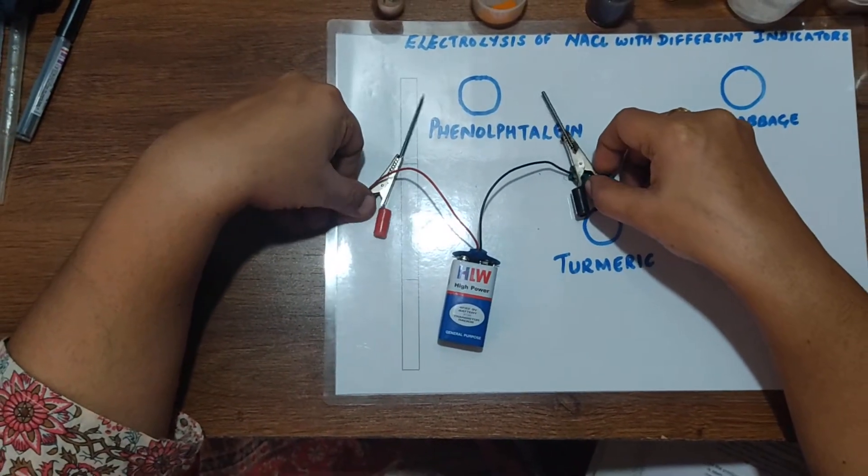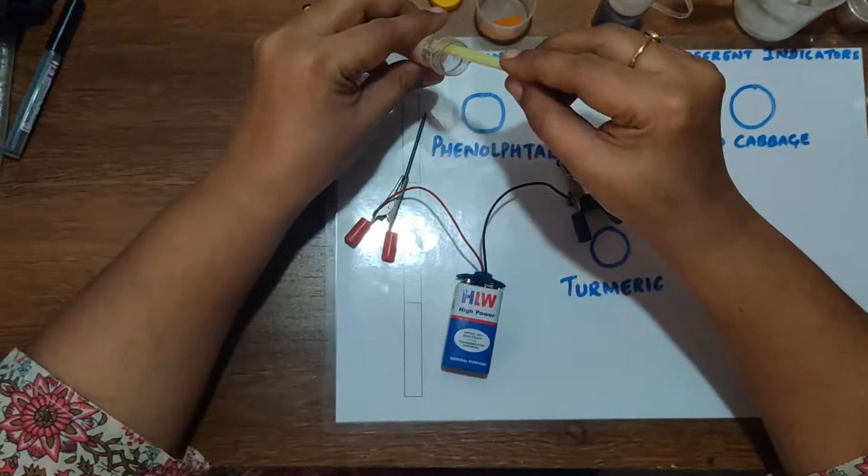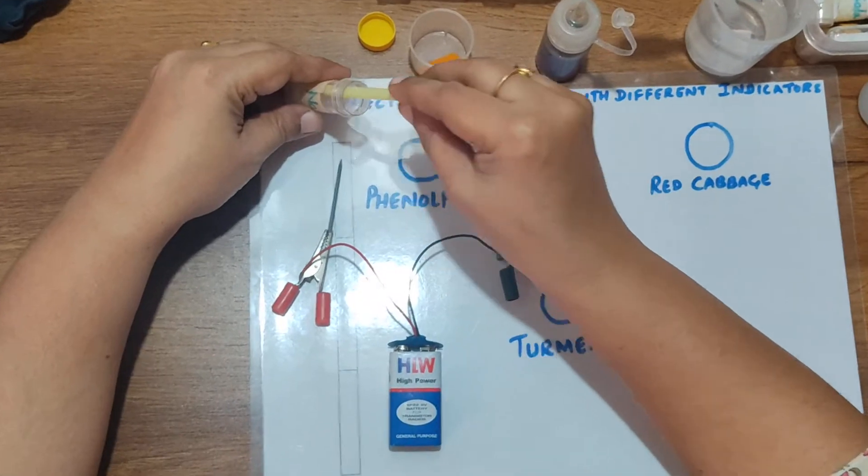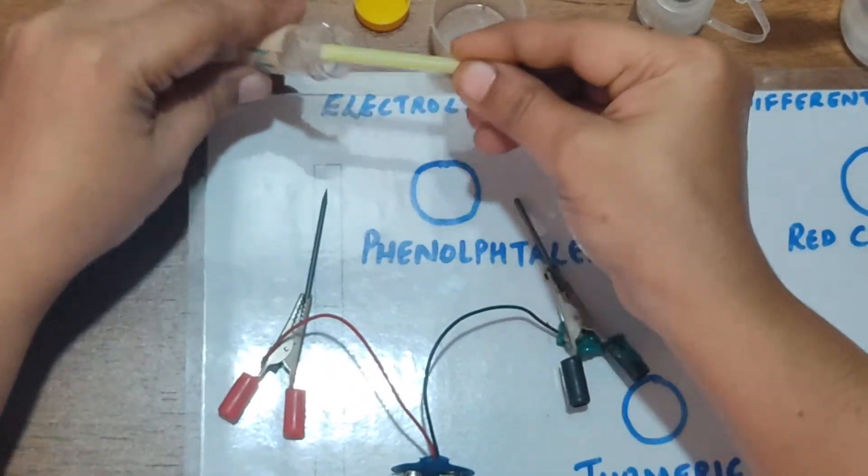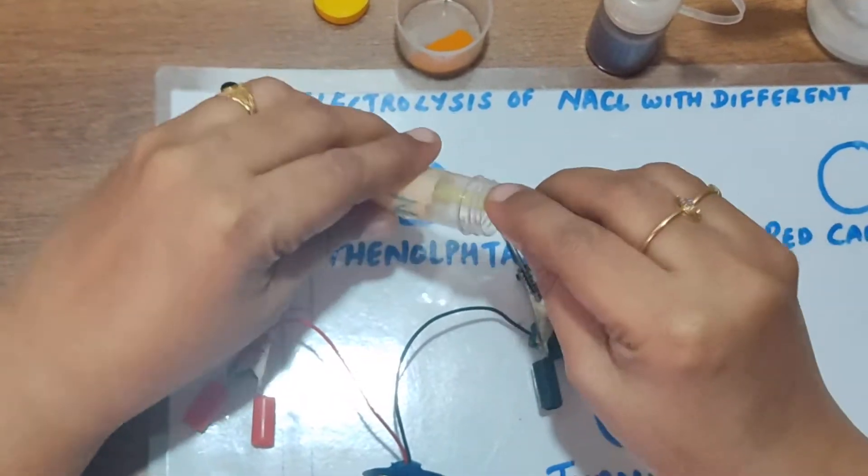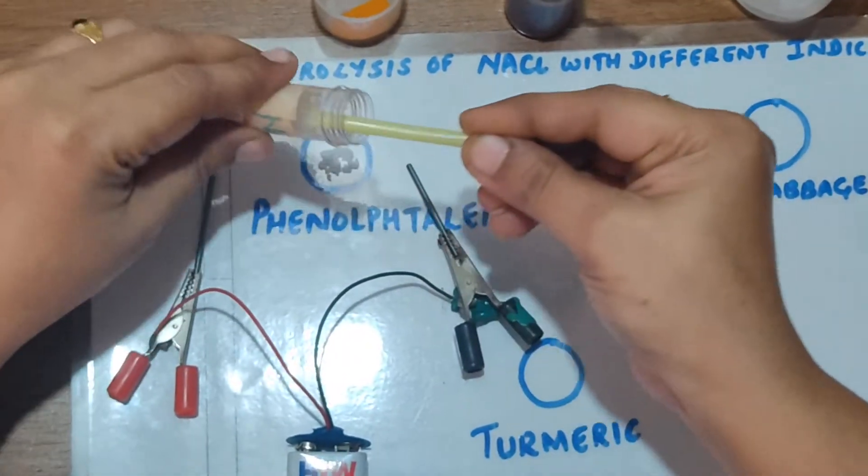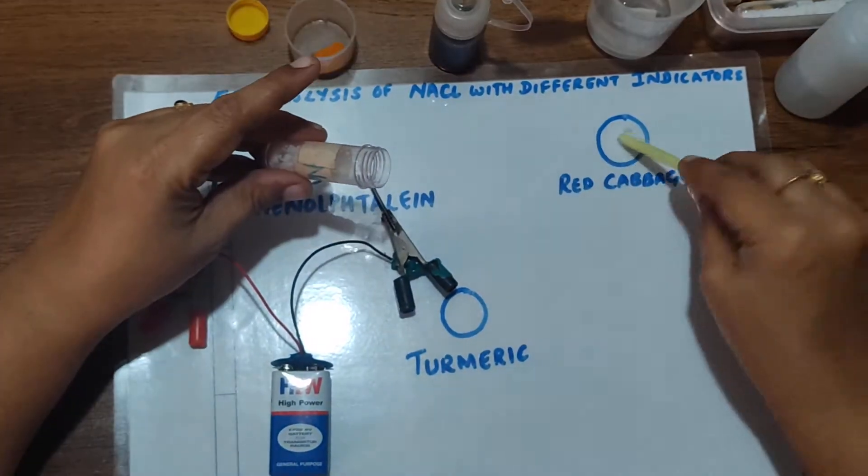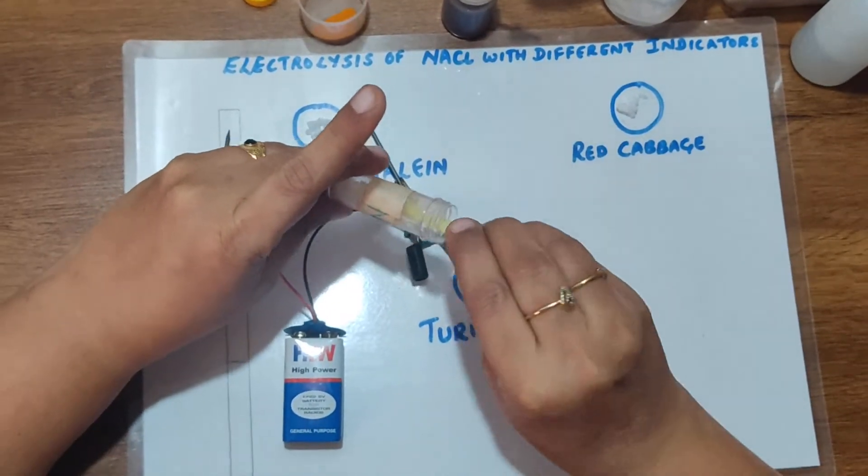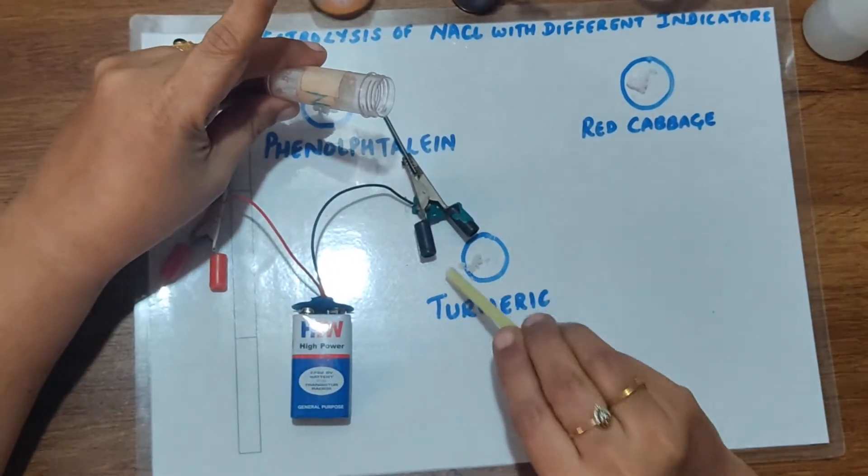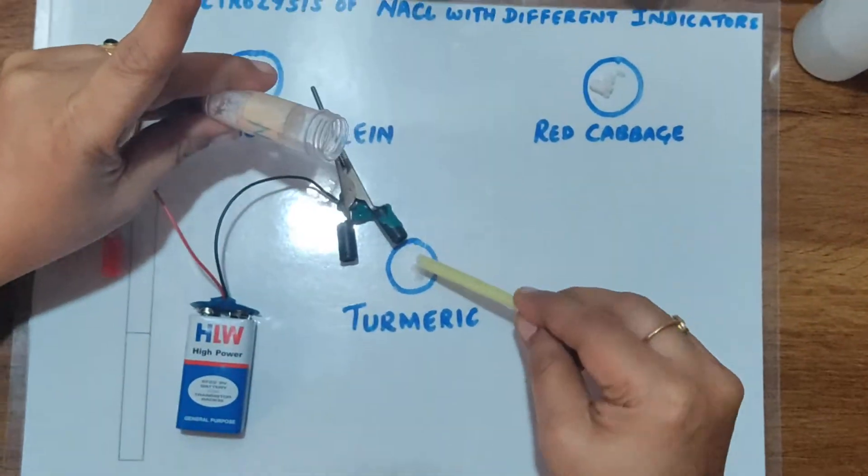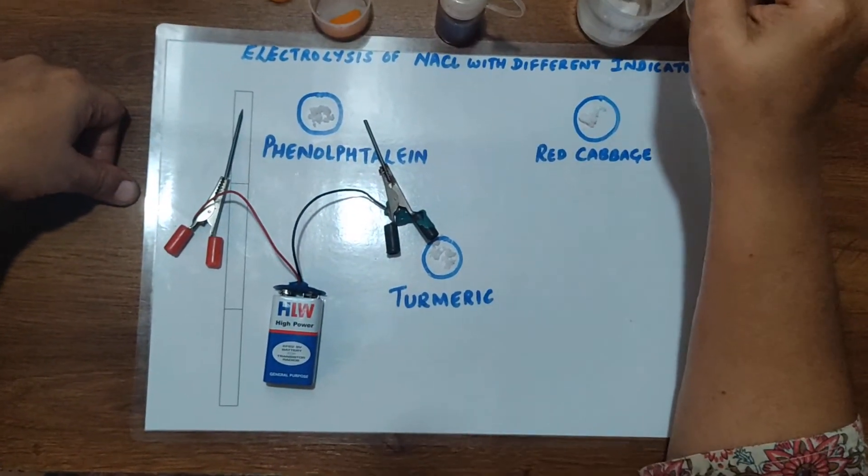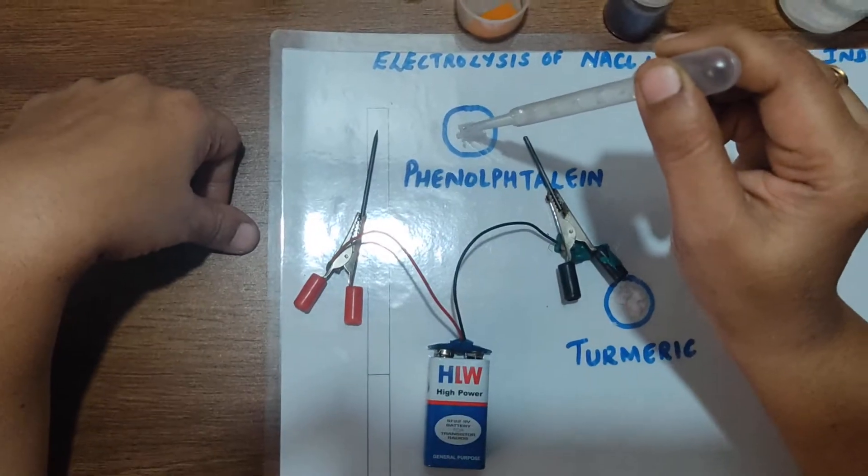Now let us perform the experiment. I've drawn three circles here. Let us transfer a small amount of sodium chloride into the three circles. You can see I've just used micro milligrams of the chemical here. Now let me add some water in the three circles to make it a solution.